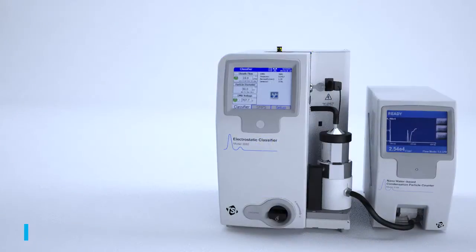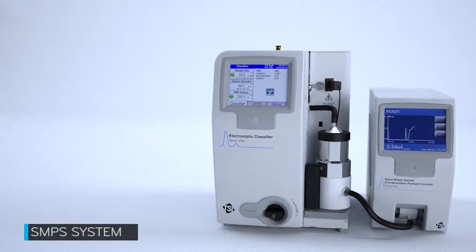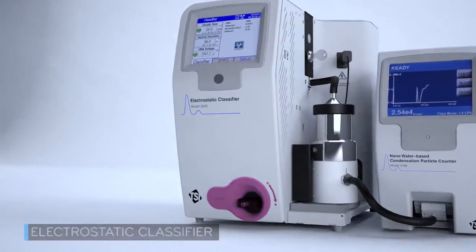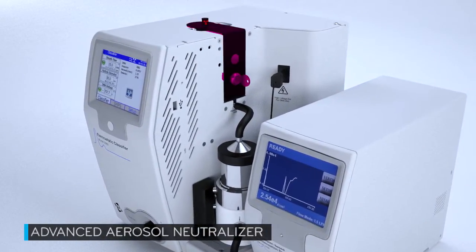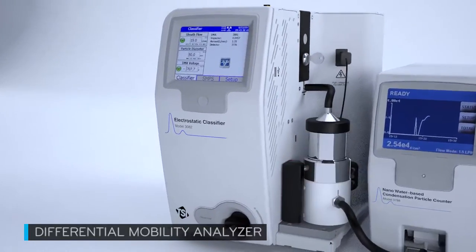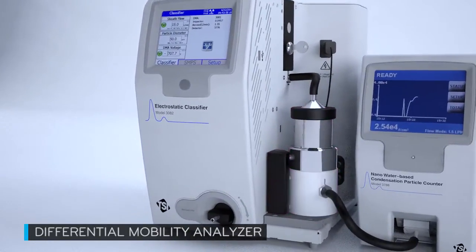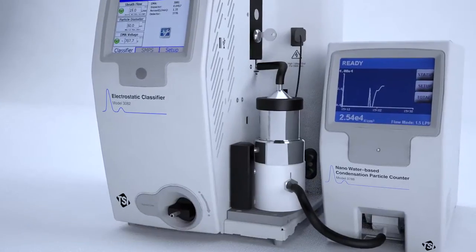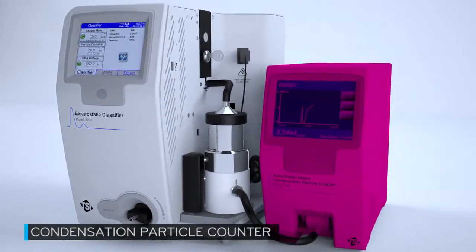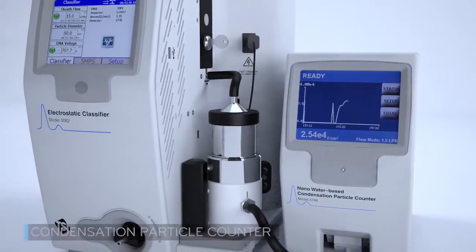The SMPS system performs four steps to generate data. First, a sample is drawn into the classifier through an impactor. Second, a bipolar neutralizer imparts a known charge distribution to the aerosol. Third, the differential mobility analyzer, or DMA, selects particles based on electrical mobility. Finally, the selected particles are counted using the CPC. Let's take a closer look at this process.